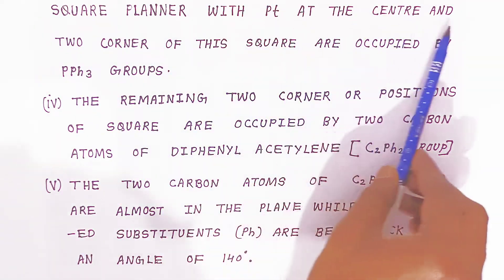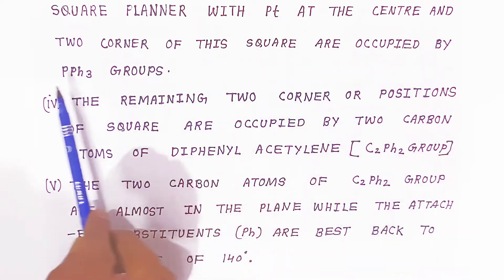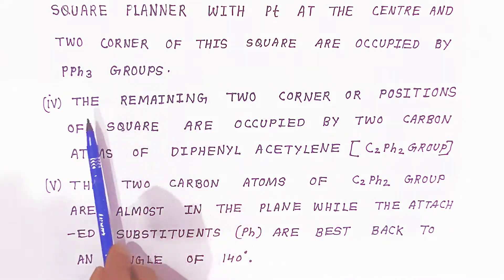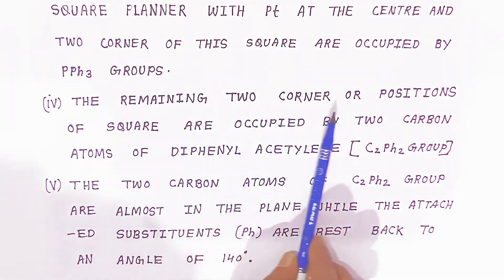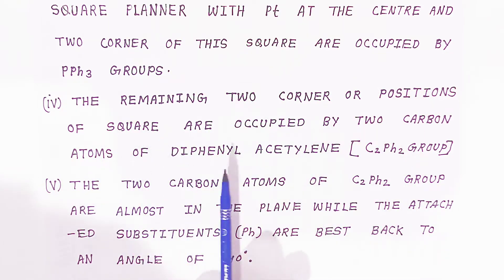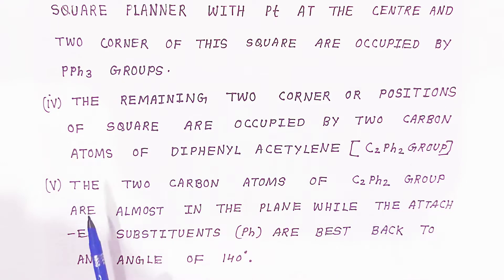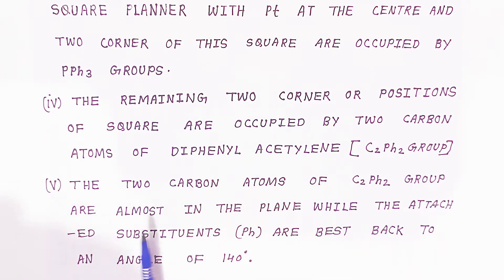The complex is approximately square planar with platinum at the center. Two corners of the square are occupied by triphenyl phosphine groups. The remaining two corners are occupied by two carbon atoms of the diphenyl acetylene (C₂Ph₂) group. These two carbon atoms are almost in the plane, while the attached phenyl substituents are bent back, making an angle of 140 degrees.